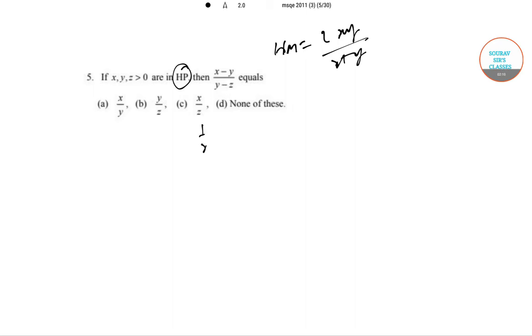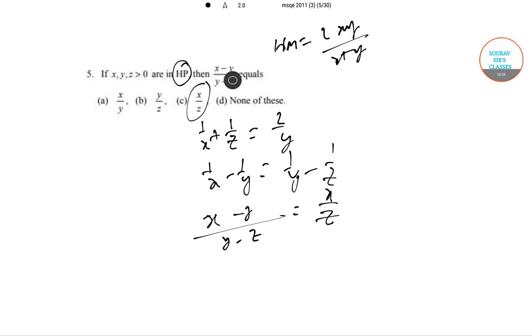We know that 1/x plus 1/z equals 2/y, where x, y, z are in harmonic progression. So we just put this thing here, and so (x-y)/(y-z) equals x/z. Just a little bit of changing, so this portion gives you C as an answer.